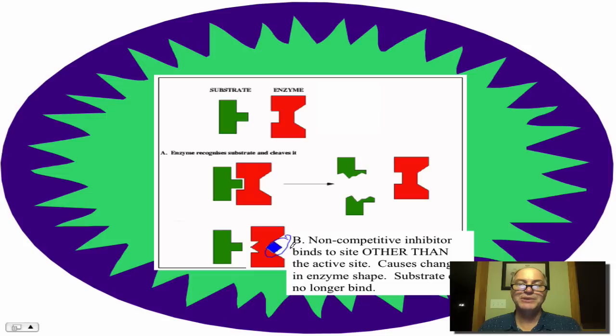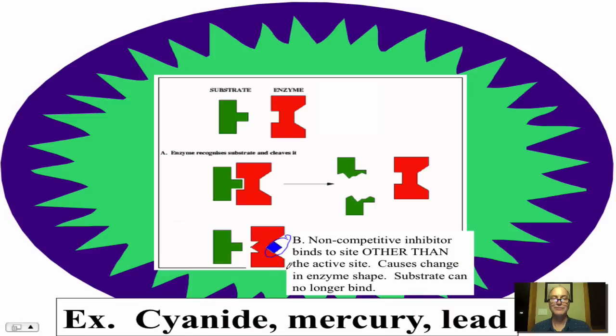So, competitive inhibitors compete with the substrate for the active site, non-competitive inhibitors bind to another site. Great example. Everybody knows mercury and lead can cause poisoning. Cyanide is also a chemical that can cause poisoning. Each of these bind to a crucial enzyme in our body, and it binds permanently to a site that's not the active site, and yet it pretty much denatures that enzyme and keeps it from being active.